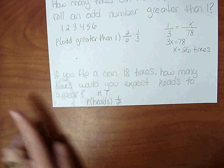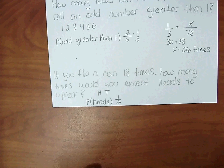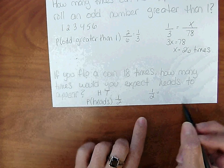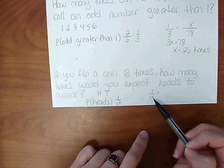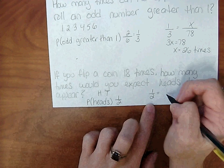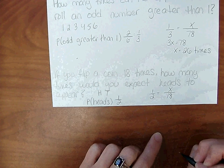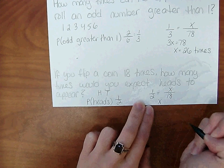So if you flip the coin 18 times, we can set up a proportion. This one's easy, you probably don't need to, but 1 time will be heads out of 2 total tosses. So when you flip 18 times, that also lines up in the denominator, x in the numerator. So you should get heads 9 times.